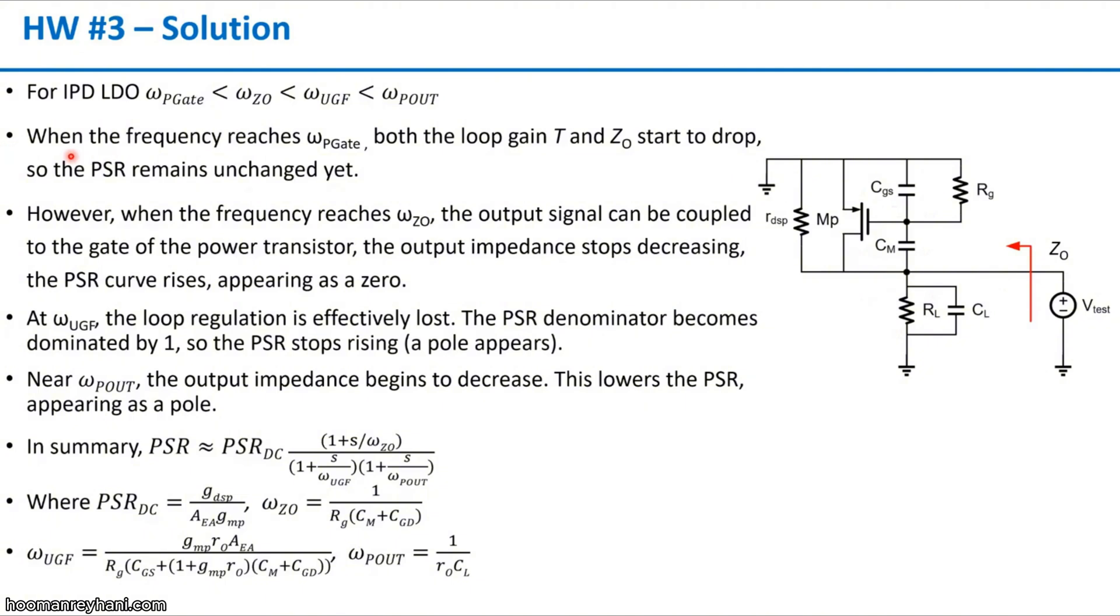When we consider the frequency versus the PSR, when the frequency reaches the gate pole, both the loop gain and the output impedance start to drop due to the pole at the gate, and then the PSR remains unchanged yet. When the frequency keeps increasing and reaches the zero of the power stage, the output signal can be coupled to the gate of the power transistor, and then the output impedance starts to decrease. So the PSR will rise, which means the PSR becomes worse, like a zero at this frequency. At the unit gain frequency of loop gain, the loop regulation is effectively lost. So the PSR denominator will become dominated by 1, because T is smaller than 1 after the unit gain bandwidth, and then the PSR stops rising.